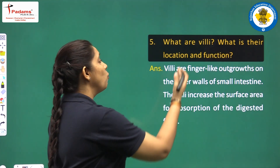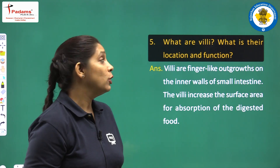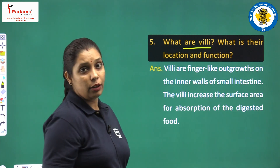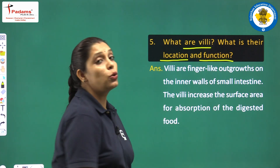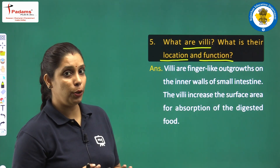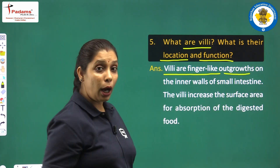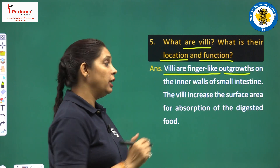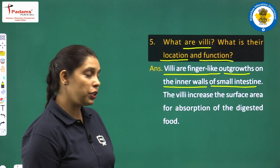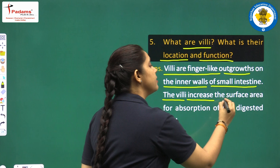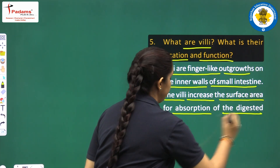Next question: what are villi? What is their location and function? There are three points to cover. Villi are finger-like outgrowths on the inner wall of the small intestine. Their function is to increase the surface area for absorption of digested food.